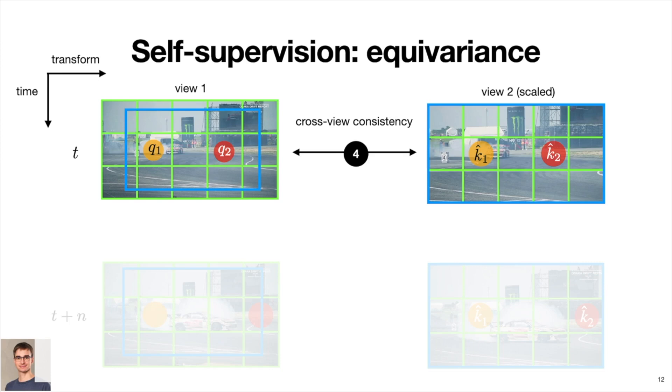That is, the feature in the first view should have the closest counterpart in the corresponding location of the second view. We will formalize this shortly.